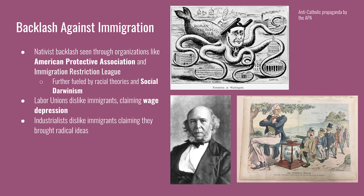Labor unions initially disliked immigrants because they claimed immigrants were the source of wage depression. Industrialists disliked immigrants, claiming they brought in radical ideas and would organize workers into unions. The political cartoon on the bottom right also shows the political implications of greater immigration. Naturalization to become a U.S. citizen took five years, granting new immigrants the right to vote. The criticism was that immigrants did not assimilate fast enough for the liking of most Americans, and thus should increase the naturalization period.